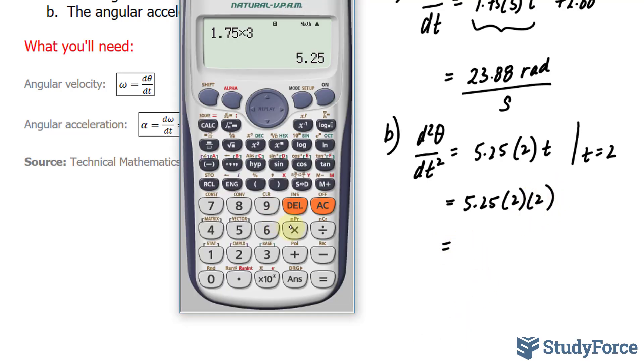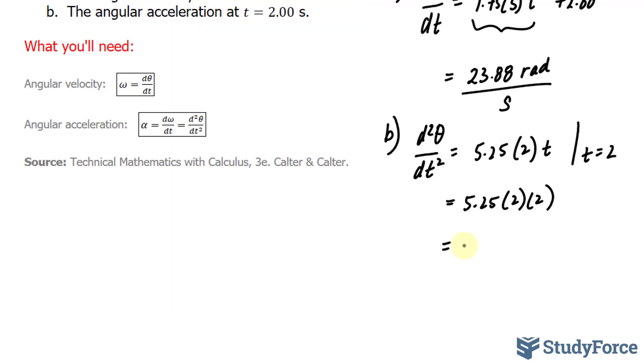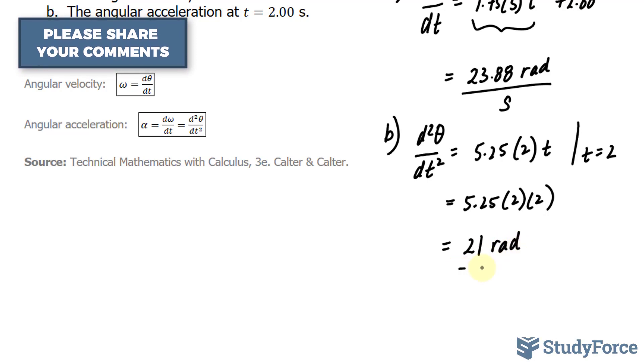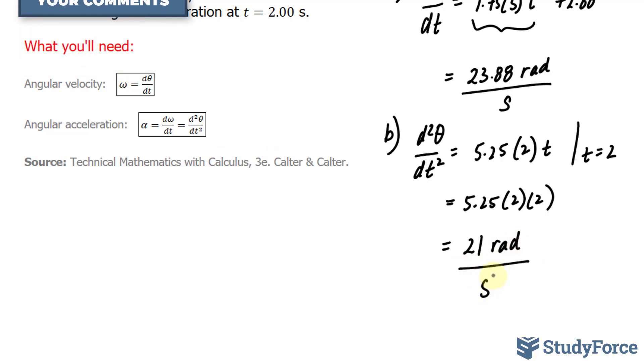Let's see what we get. Multiply this by 2, multiply it by 2, that gives us 21. Therefore, 21 radians per second squared is our instantaneous acceleration when t = 2.